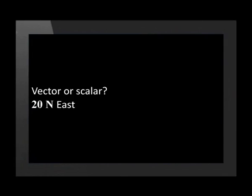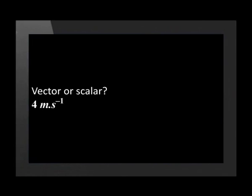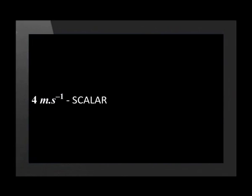Our second example is 20 newtons east — is that a vector or a scalar? This measurement has a magnitude of 20 newtons and a direction of east, so it is a vector quantity. Our third example is 4 meters per second. This measurement has a magnitude of 4 meters per second but no direction is given, so it is a scalar quantity.